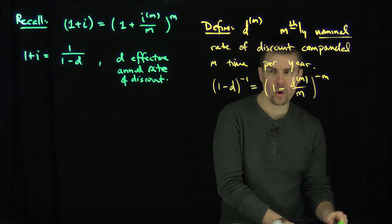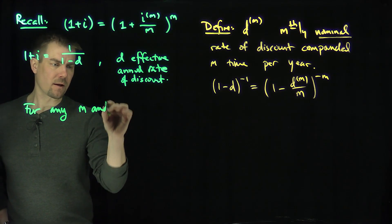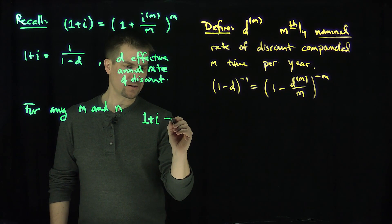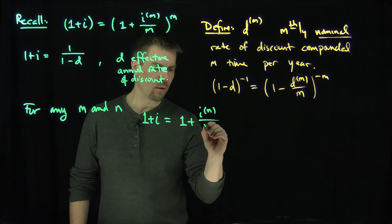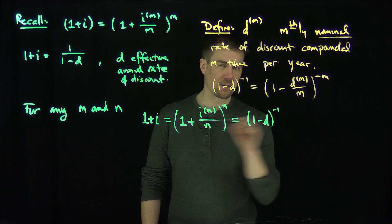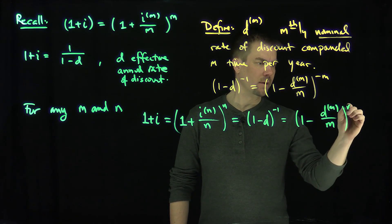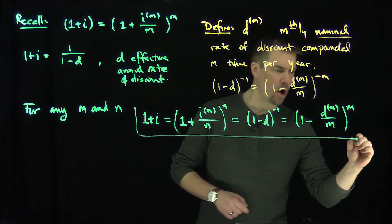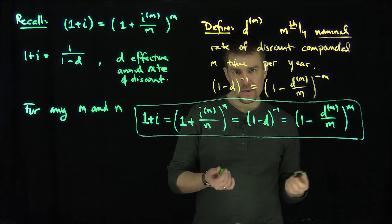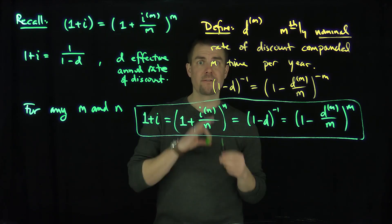We can relate all of these quantities to one another. For any m and n, we have the relationship: 1 + i = (1 + i^(n)/n)^n = (1 - d)^(-1) = (1 - d^(m)/m)^(-m). This one formula relates all of the corresponding quantities. If I know an n-thly nominal rate of interest, I can find an n-thly nominal rate of discount, and vice versa — any of the corresponding interest rates given this one formula.